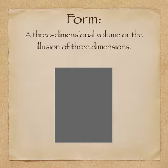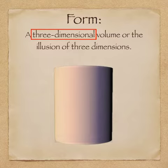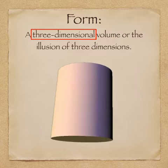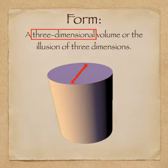Now let's take a look at the term three-dimensional. Whereas the rectangle only had two dimensions — width and height — this cylinder gets the third dimension, depth, added to it. It's this third dimension of depth that makes the cylinder three-dimensional.